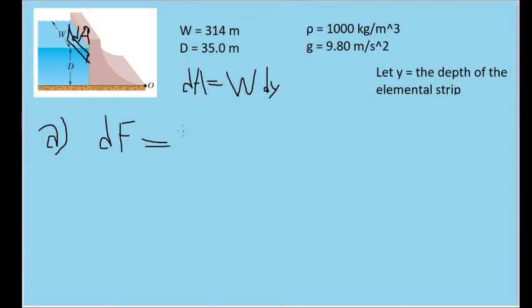In this case, the gauge pressure due to a depth is equal to the density of the fluid times g times its depth, and its area element is W dy.